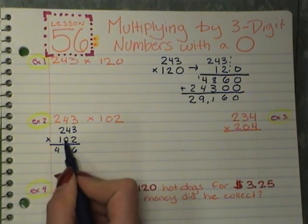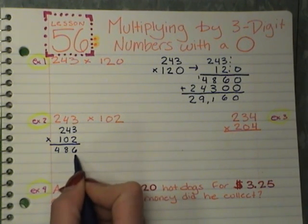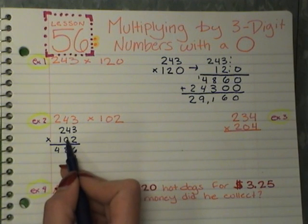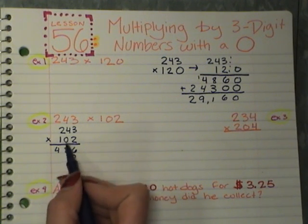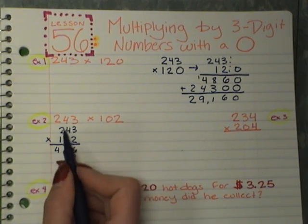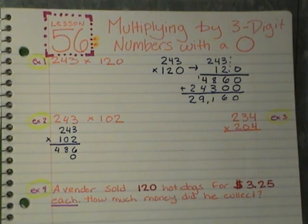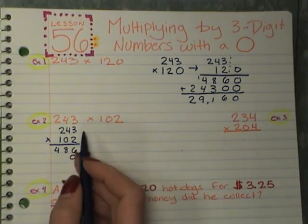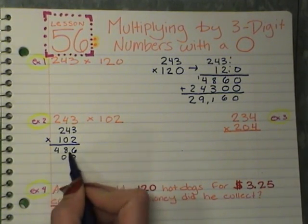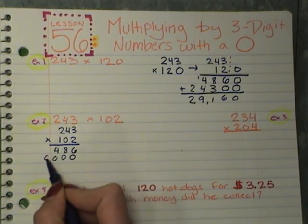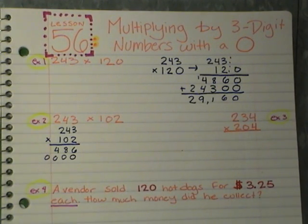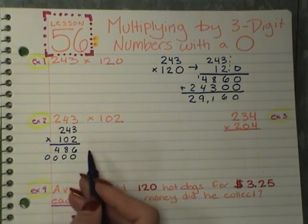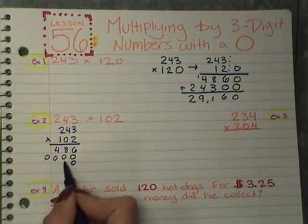Now, I'm going on to my second number, so I need to drop my 0. But, my second number is a 0. If I do 0 times 3, 0 times 4, 0 times 2, they all equal 0. So, what I can do is say, alright, 0 times all these numbers is 0, so I'm going to skip my line, or write in my 0 times 3, 0 times 4, 0 times 2, write in my 0's. And now I go to my next line, which is a 1, so I need to drop two 0's now.